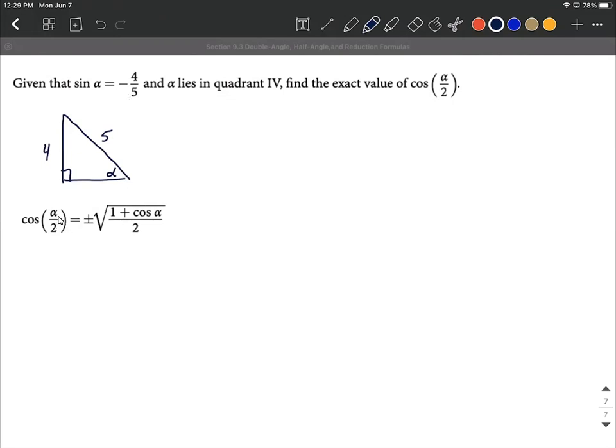You'll notice for the half angle formula for cosine, we're going to have to find cosine of alpha. Cosine of alpha is adjacent over hypotenuse, so we're going to have to find this adjacent side length. I'm going to label that as B and use the Pythagorean theorem to help us find B.